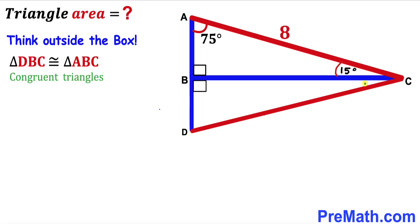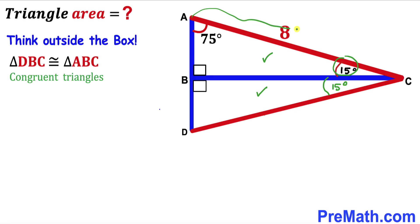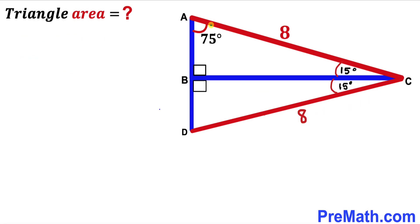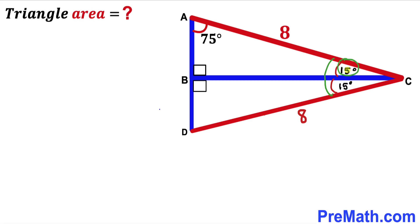Now we are going to think outside the box to make our job simple, so we created another right triangle DBC such that triangle DBC is congruent to triangle ABC. Since these two triangles are congruent, if this angle is 15 degrees then this corresponding angle is 15 degrees as well, and if AC is 8 units then CD length is 8 units as well. Now we look at the bigger triangle ADC.